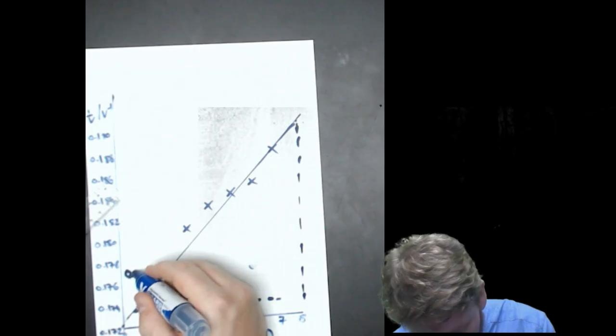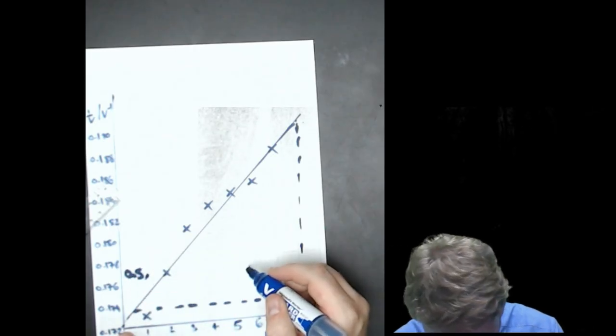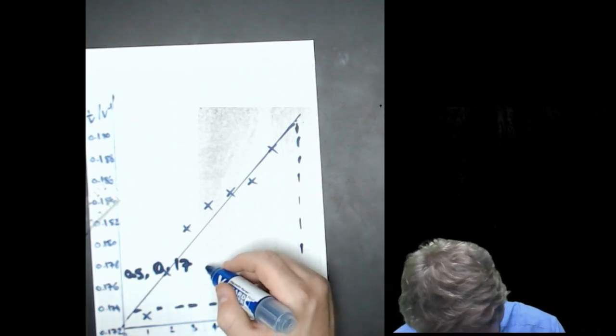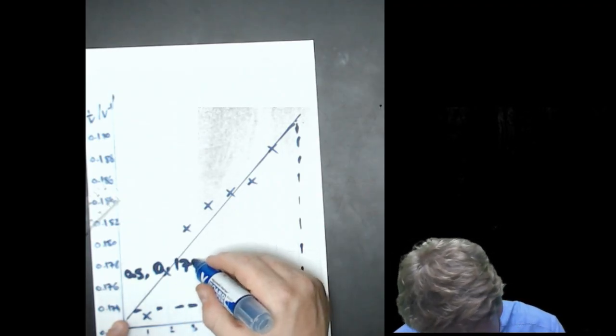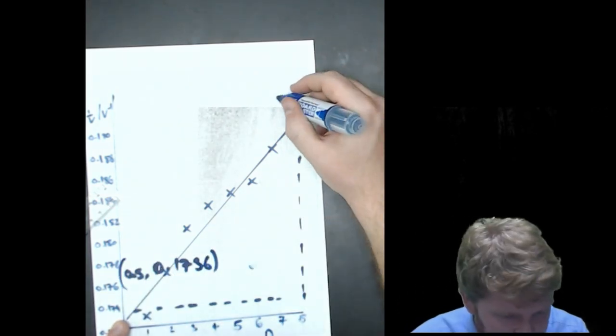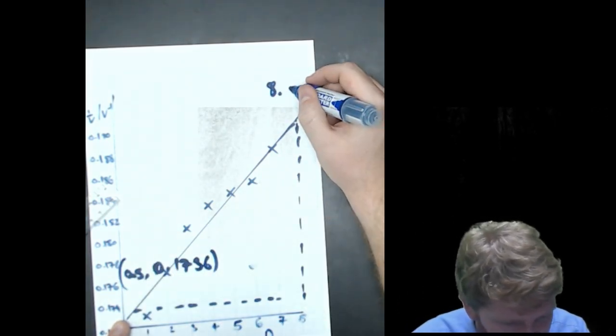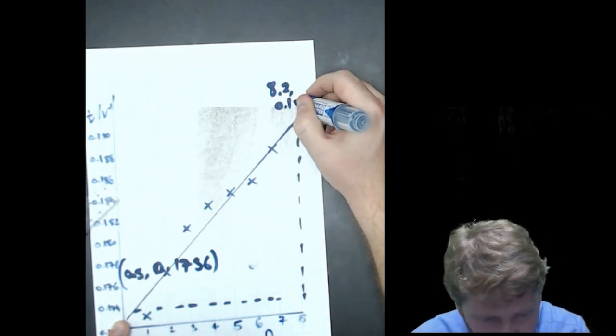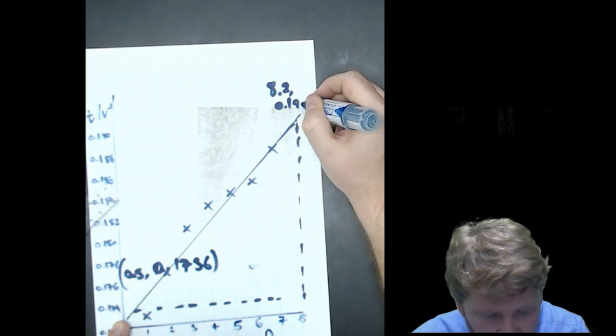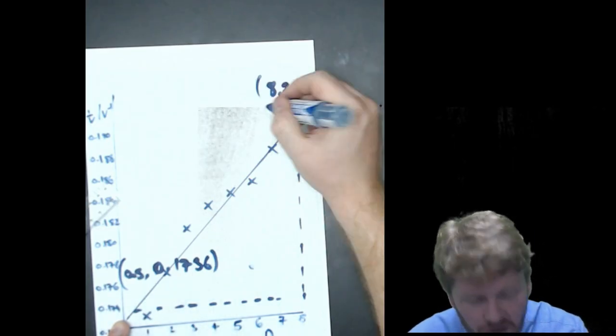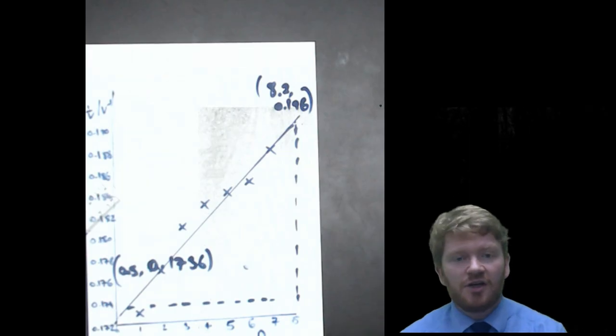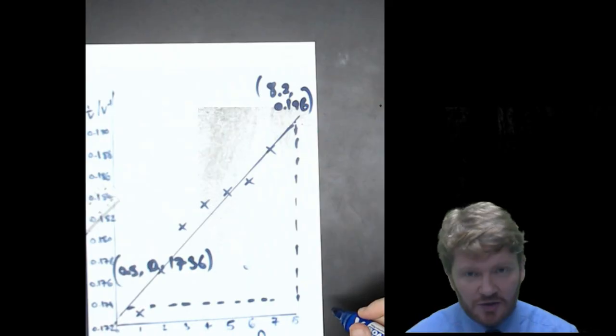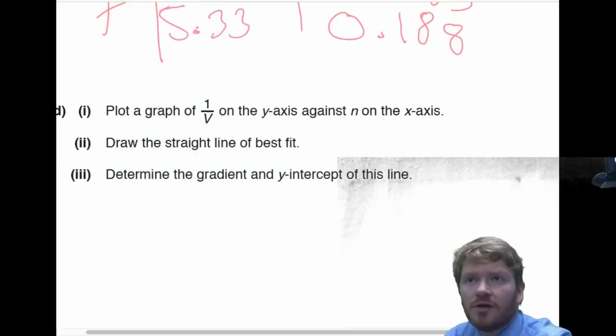There's my other one. And I always like to make it really dead obvious for the examiner the actual coordinates that I'm using. So, this one, which is 0.5, and that is 0.1736. And this one over here would be 8.2 and 0.196. Now, you'll notice that those coordinates aren't actually, this coordinate over here is actually beyond my line of best fit. That's totally fine. Nothing wrong with doing that at all.